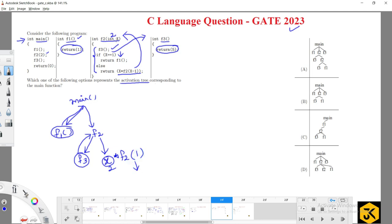f2 of 1 means the x value is 1, then it is going to call f3.